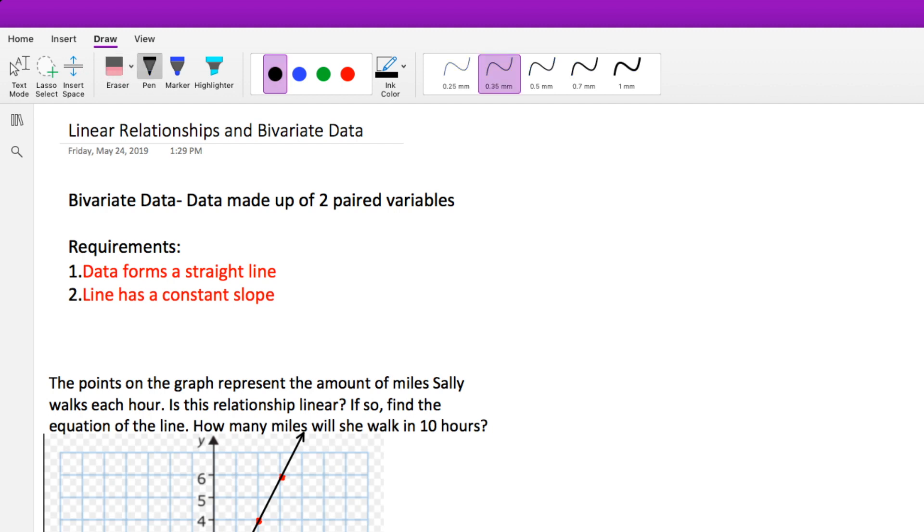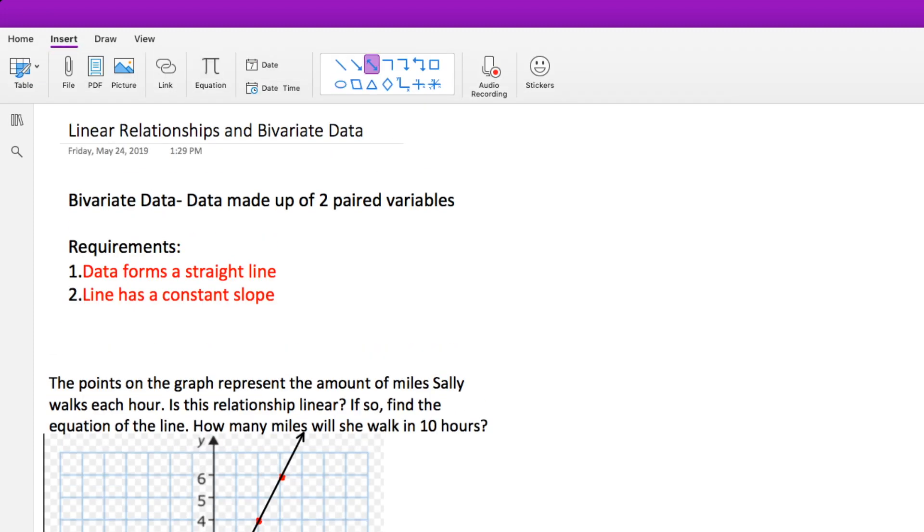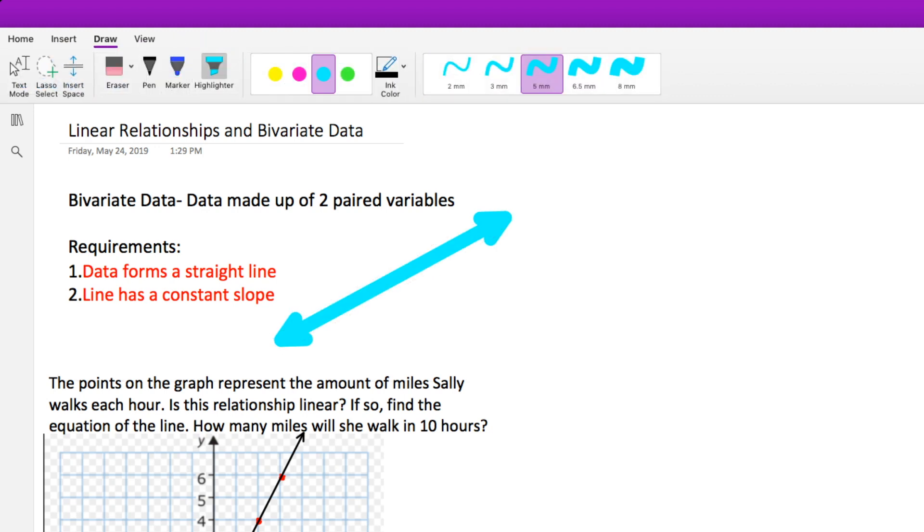So, let's look at some requirements. Requirements. Data forms a straight line. Okay, let's see if our data forms a straight line. Would this be considered possible bivariate data? It could be, because that is a straight line.